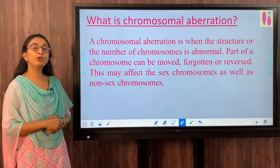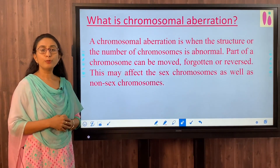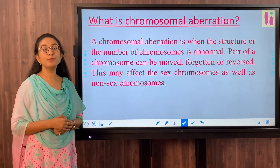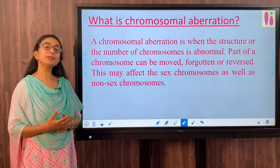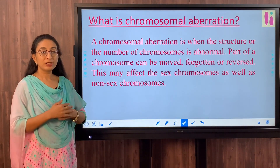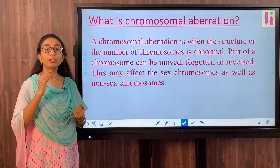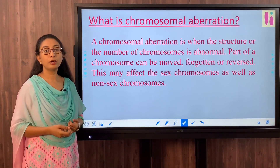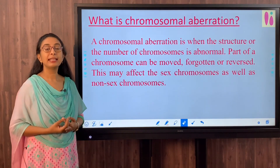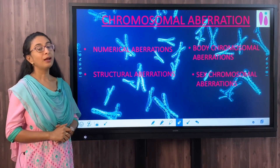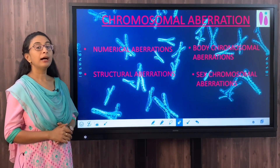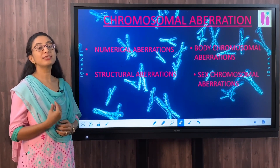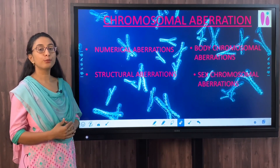A chromosomal aberration occurs when the structure or the number of chromosomes is abnormal. This may happen due to various factors. When there is an abnormality in the chromosome - either due to addition or deletion of the number of chromosomes, or due to change in the structure of the chromosome - we call it a chromosomal aberration.